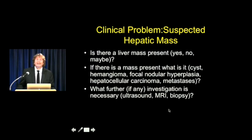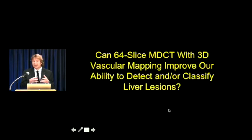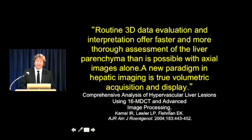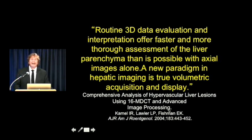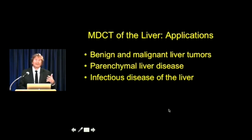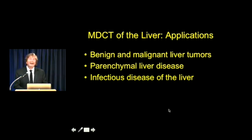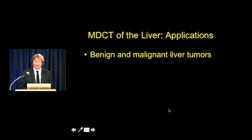The key thing is hepatic masses: is there a mass present and what is it? With 64-slice, we can do better not just for lesion detection but for classification. We noticed this naturally as we went from 4 to 16 to 64-slice, leading to the paradigm of volumetric imaging. Everything in the liver - whether tumors benign or malignant, parenchymal disease, or infectious disease - does better with newer scanners. We're going to focus on benign and malignant tumors.